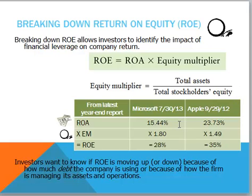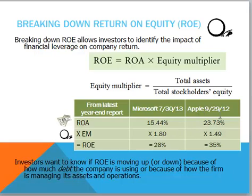We saw return on assets of 15.44% for Microsoft and 23% for Apple. When we multiply that times the equity multiplier, we have 1.80 for Microsoft and 1.49 for Apple. We see that Microsoft's leverage is higher than Apple's. But because of Apple's high return on assets, Apple still ends up with a higher return on equity of 35% than Microsoft's 28%.